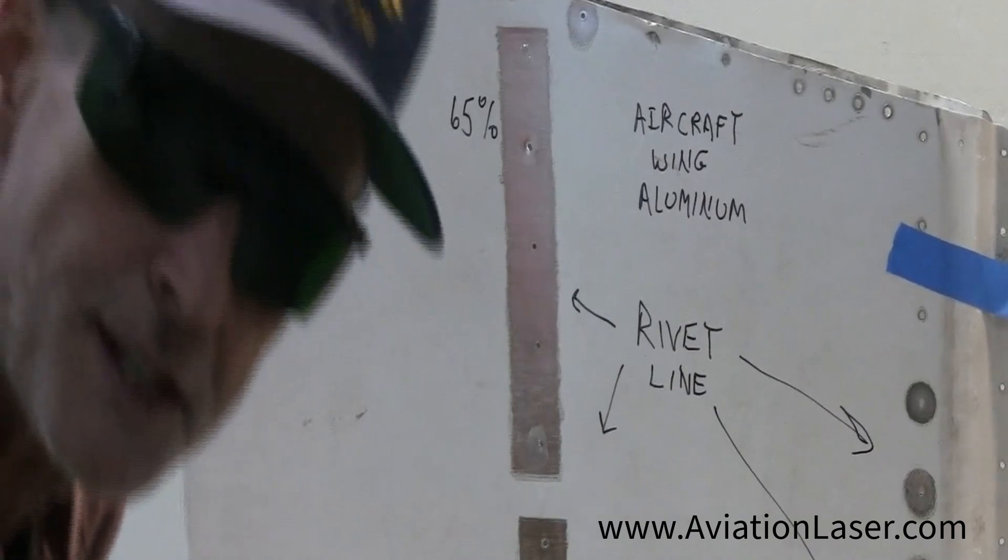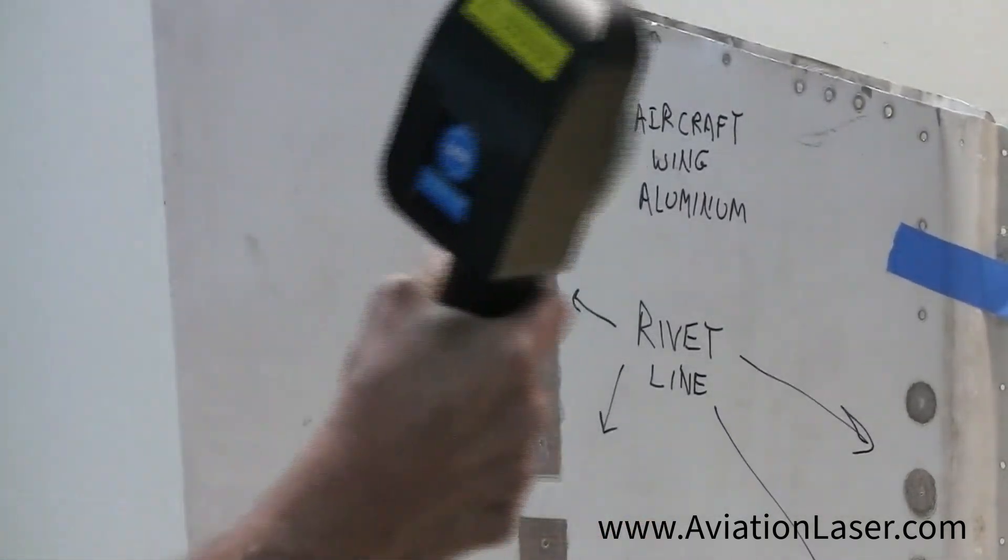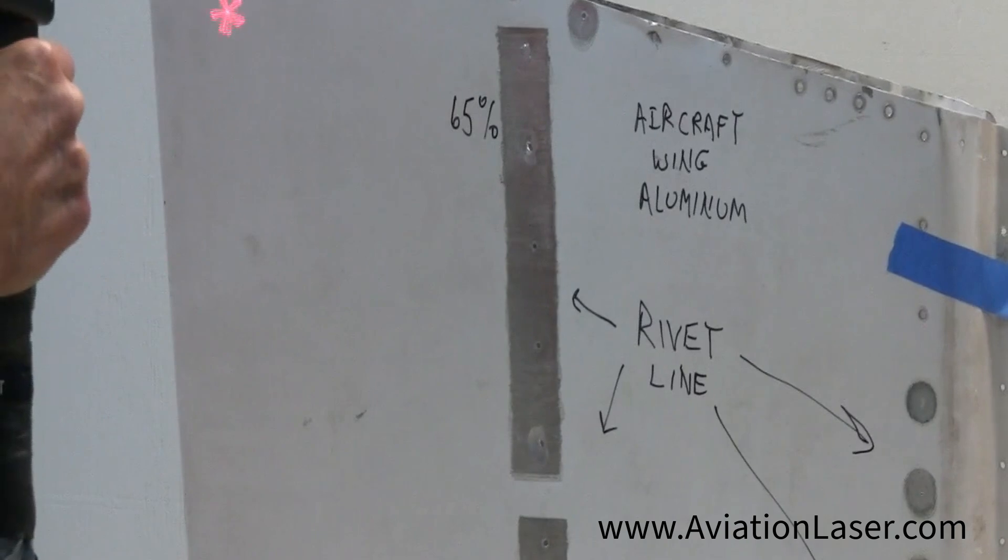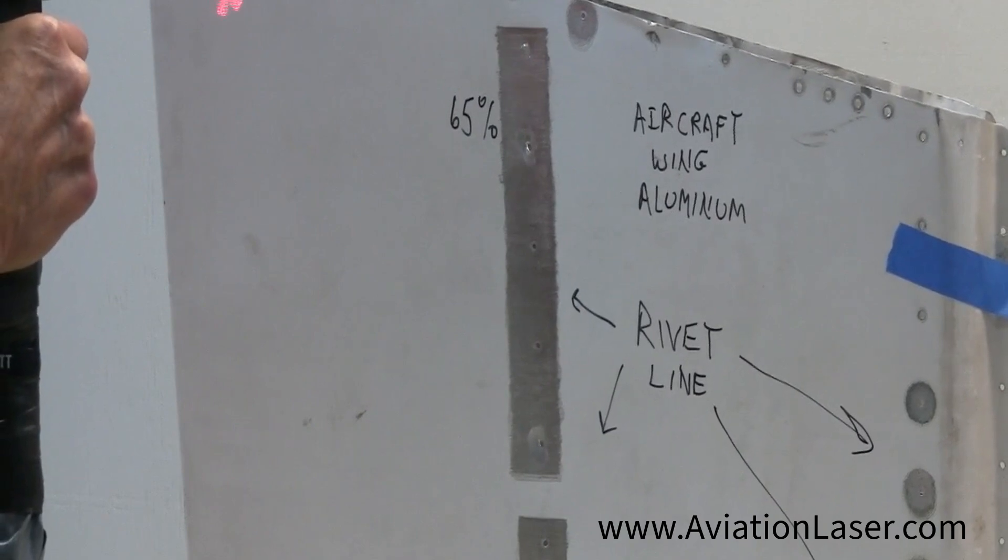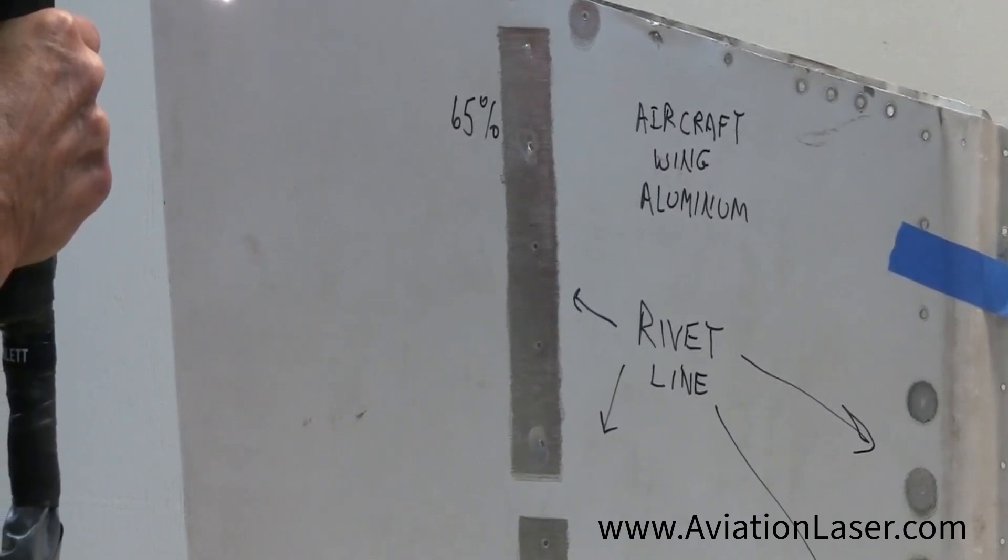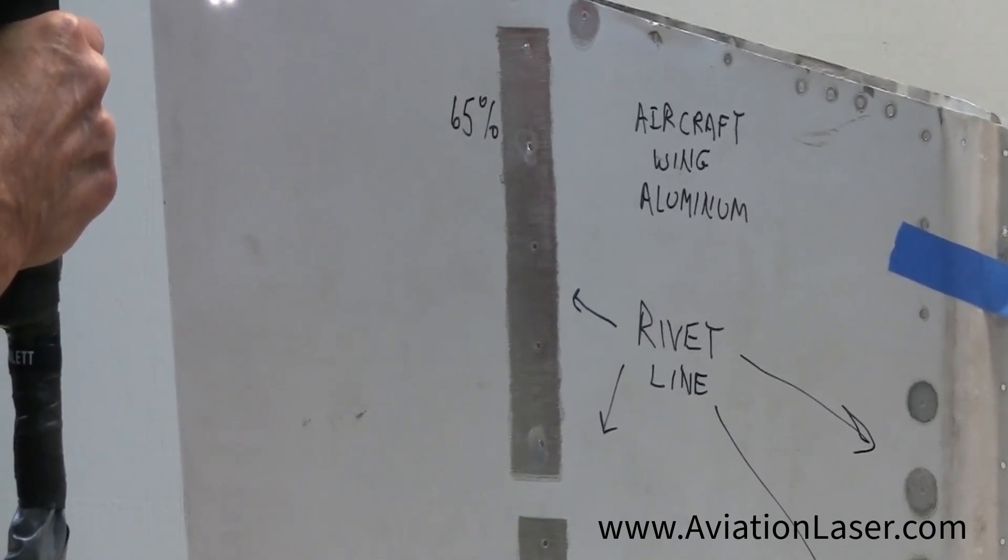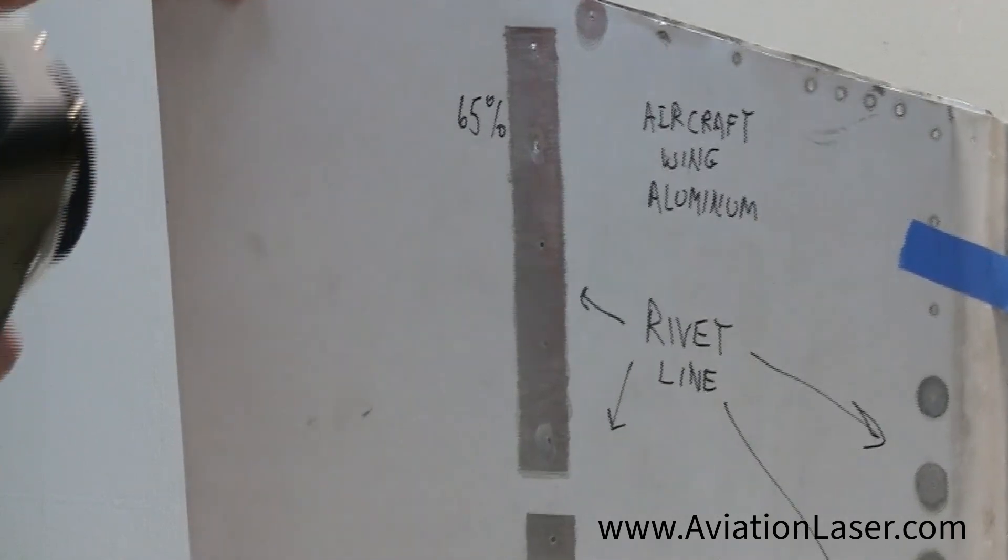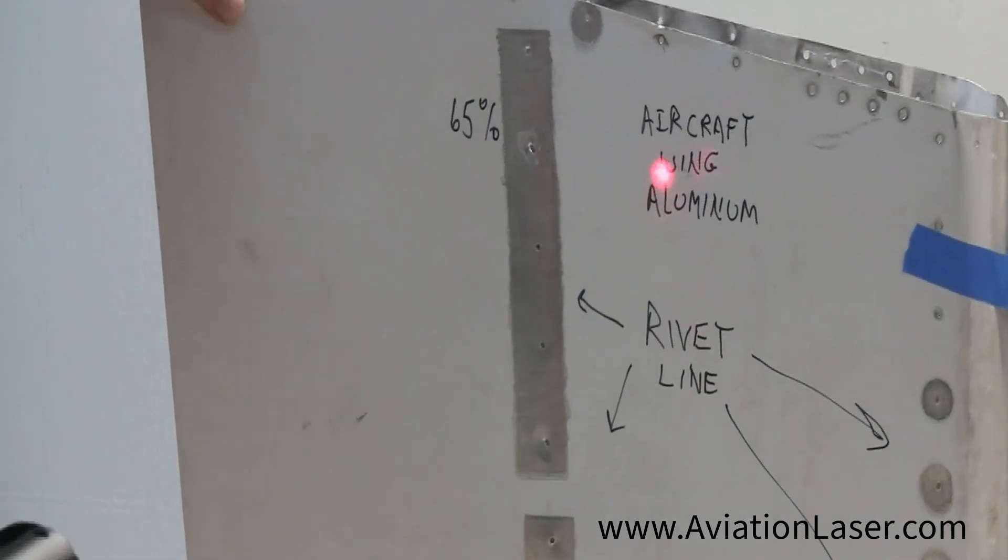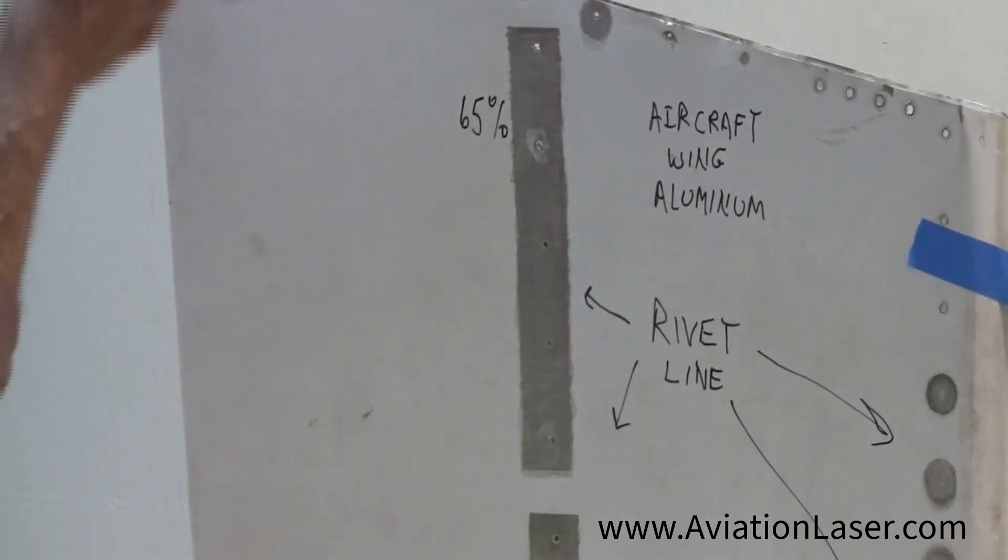Now I'm just going to pretend like I'm doing a rivet with a small area for a rivet. All right, that's gone - paint completely gone, no heat whatsoever. I'll do it one more time.